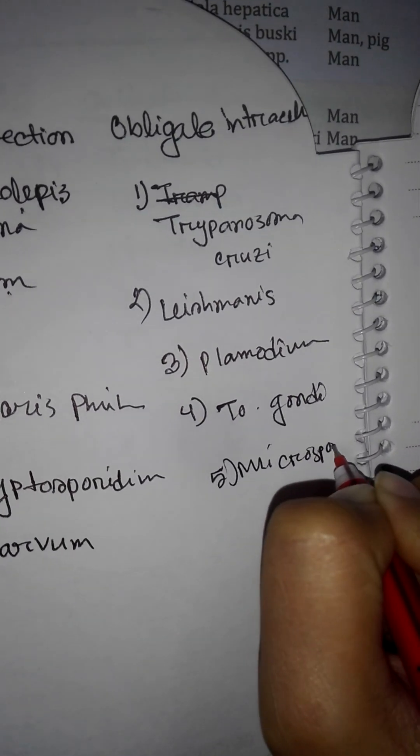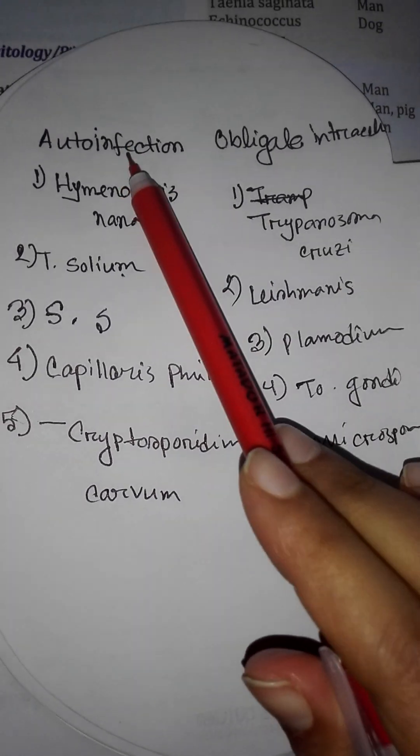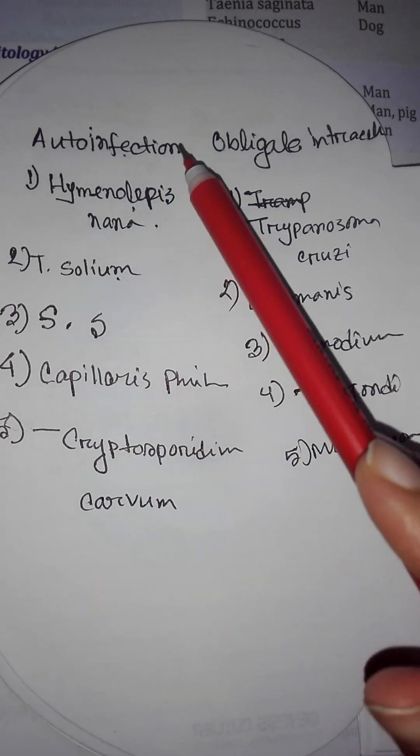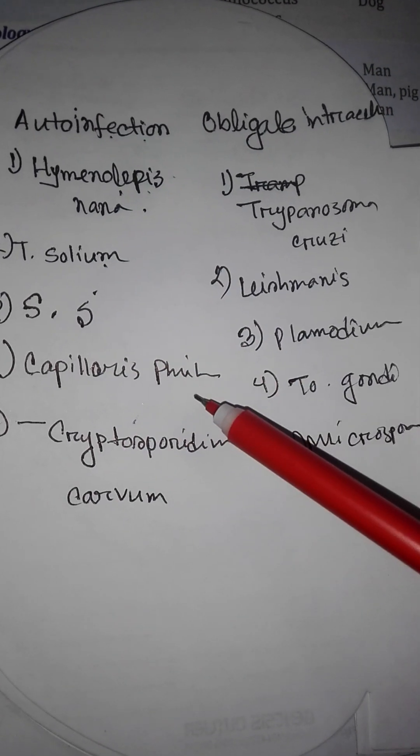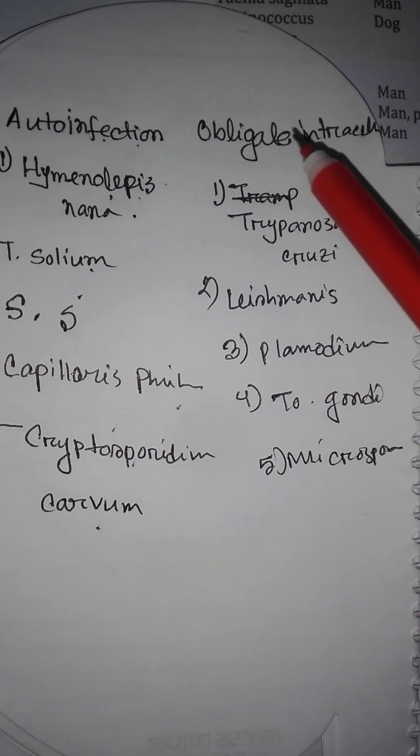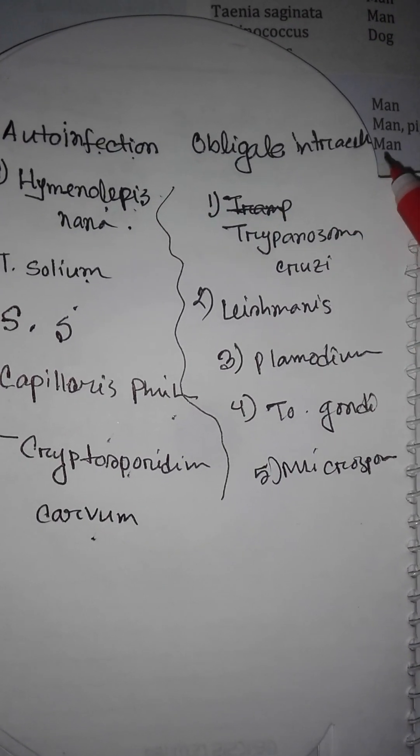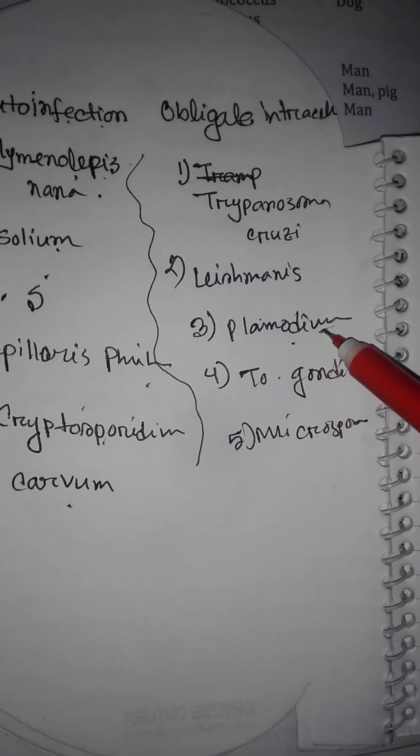Microsporidium. So auto infection causes: Hymenolepis nana, Tenia solium, Strongyloides stercoralis, Capillaris philippinensis, Cryptosporidium. And obligate intracellular: Trypanosoma cruzi, Leishmania, Plasmodium, all types.